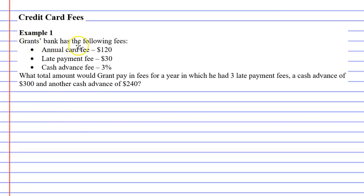Let's go into the example. We've got Grant, and his bank has the following fees: an annual card fee of $120 each year, a late payment fee of $30, and a cash advance fee of three percent. So what total amount would Grant pay in fees for a year in which he had three late payment fees, a cash advance of $300, and another cash advance of $240?